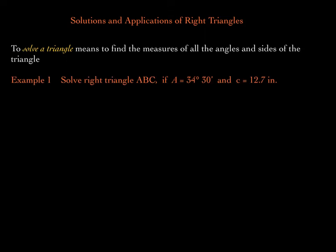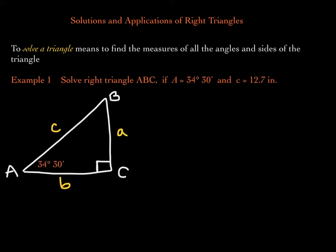Solve right triangle ABC if angle A is given and it is 34 degrees and 30 minutes, or 34 and a half degrees, and C is 12.7 inches. So one angle is given and a side length. Actually, two angles are given because they told us it's a right triangle, so we know one angle must be 90 degrees. Let's draw a picture to get us started — a picture always helps.